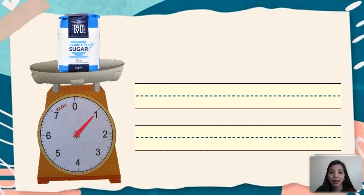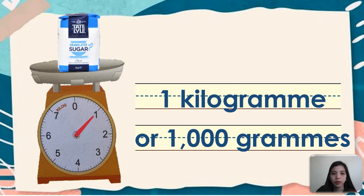Another example, we have here a bag of sugar. So the pointer points to the 1 kilogram mark. So therefore, this sugar bag weighs 1 kilogram or 1,000 grams. Again, 1 kilogram is equal to 1,000 grams.